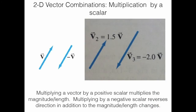Now let's look at multiplication by a scalar — a single number multiplied by a vector. Multiplying by a positive scalar magnifies the length. Here's V; here's 1.5V — one and a half times as long. Multiplying by a negative scalar turns the vector around and then magnifies the length. Multiplying by −1 turns it around with the same magnitude. Multiplying by −2 turns it around and doubles its length. For example, 5V would be a vector in the same direction, five times as long.